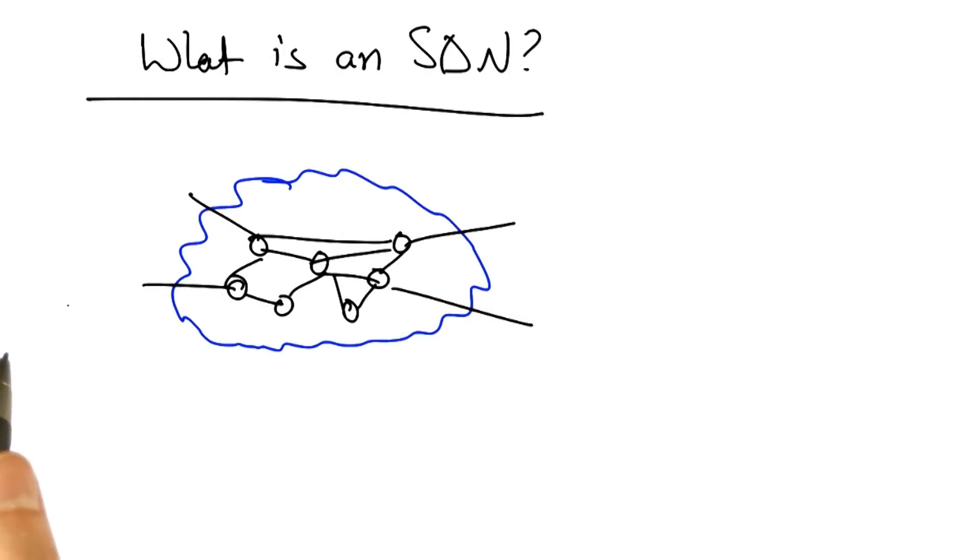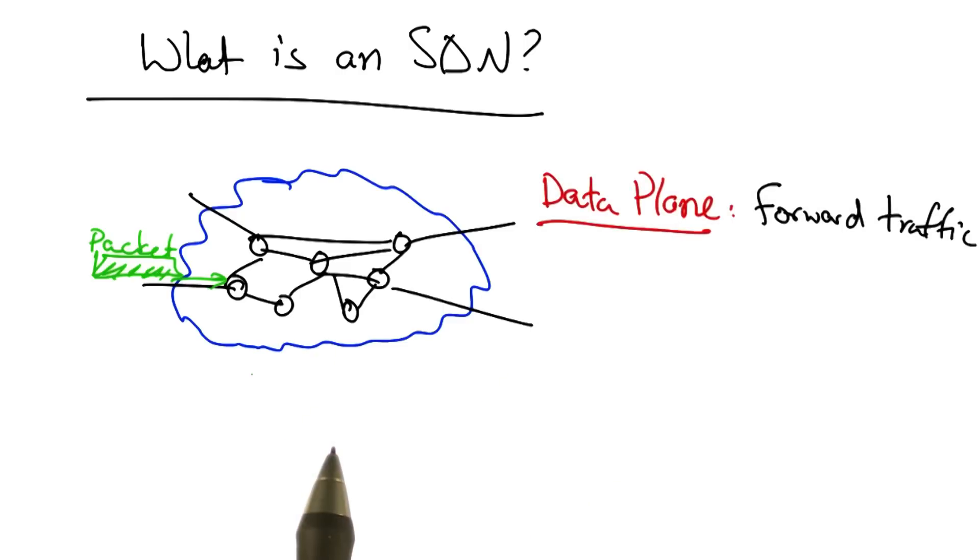Perhaps the best way to understand what an SDN is, is to compare it to the behavior of today's networks. Today's networks have two functions. The first is the data plane, whose task it is to forward packets to their ultimate destination.